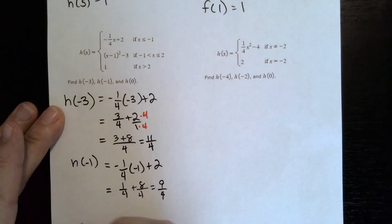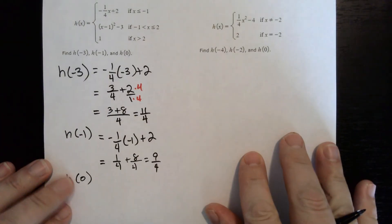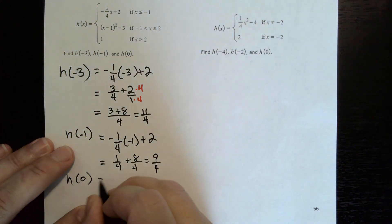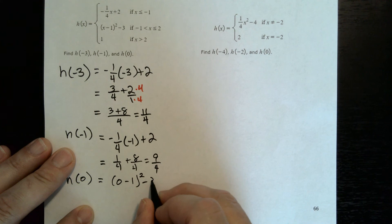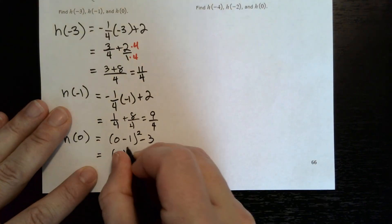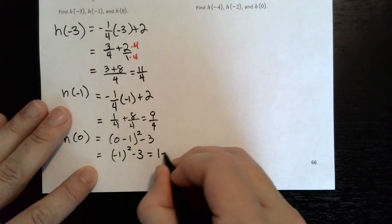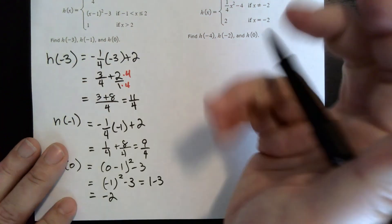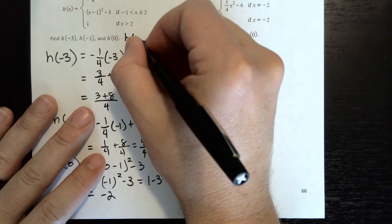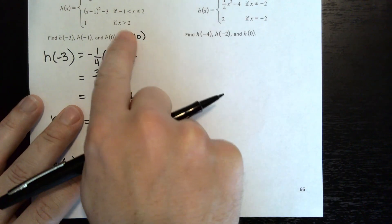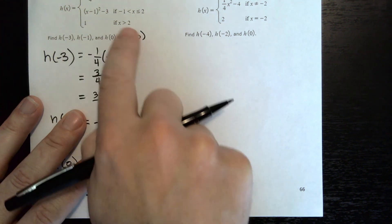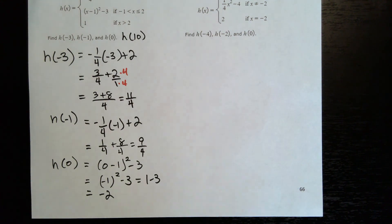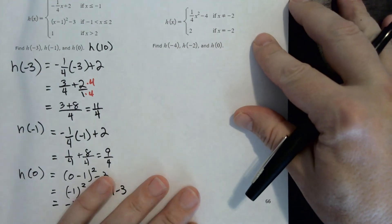For h of 0: 0 is not less than or equal to negative 1, but it is between negative 1 and positive 2, so use the second function. Plugging in 0: 0 minus 1 squared minus 3 equals negative 1 squared minus 3 equals 1 minus 3, which is negative 2. For h of 10: 10 is bigger than 2, so the answer is 1. Any x value greater than 2 gives an answer of positive 1.